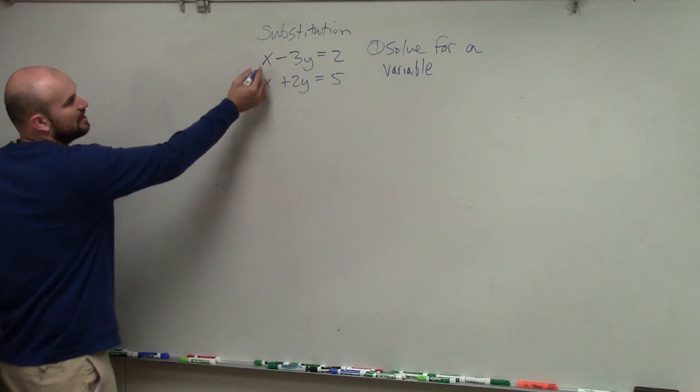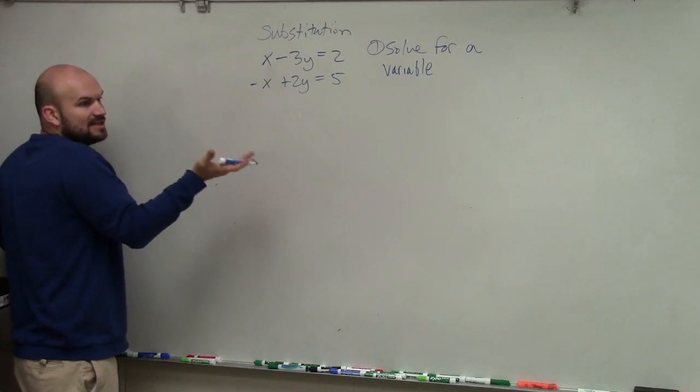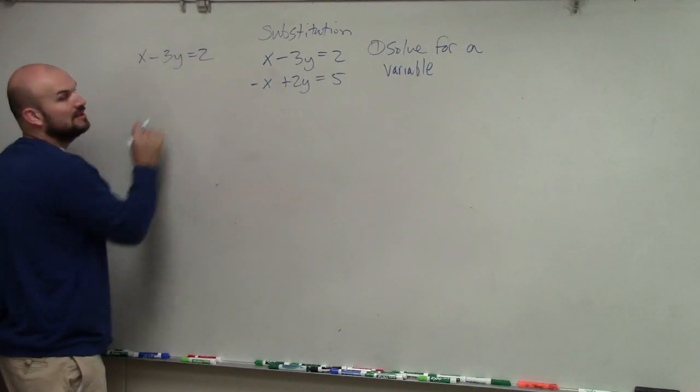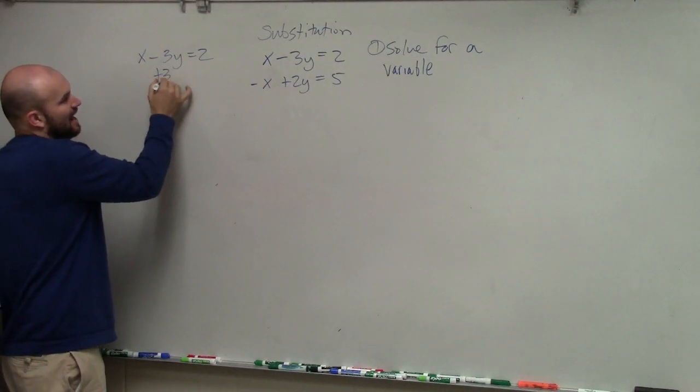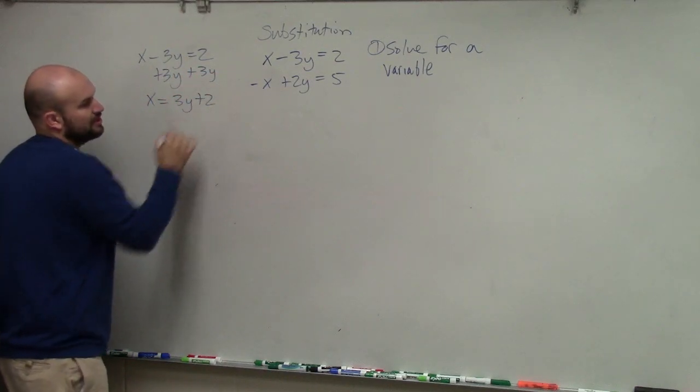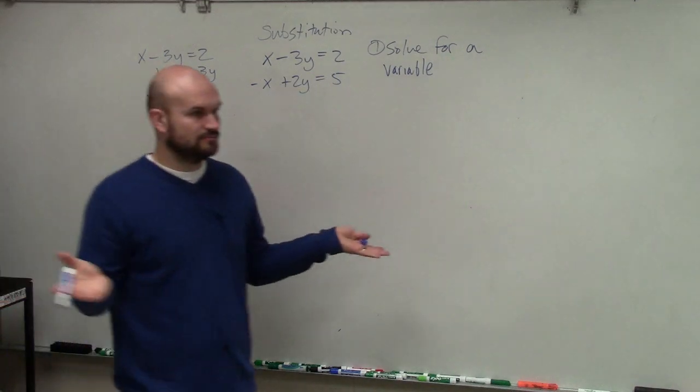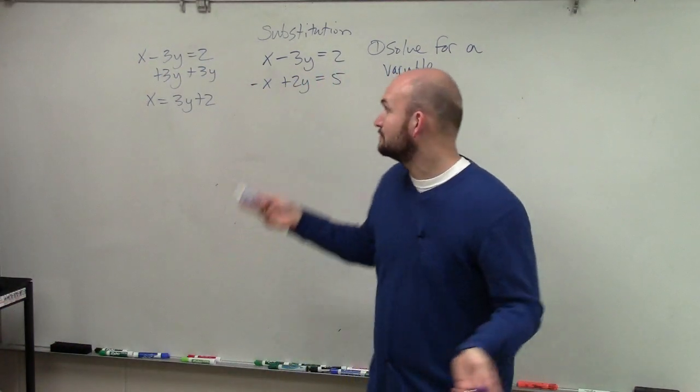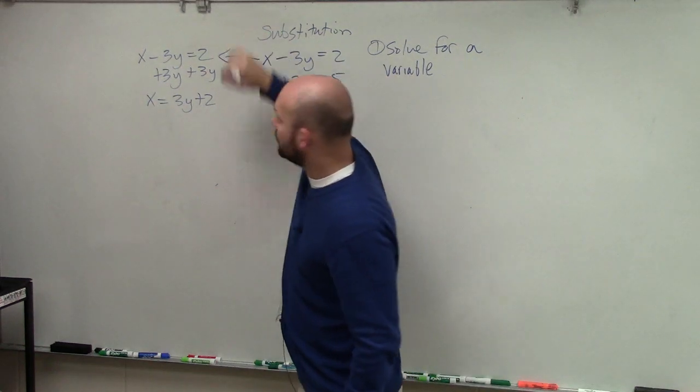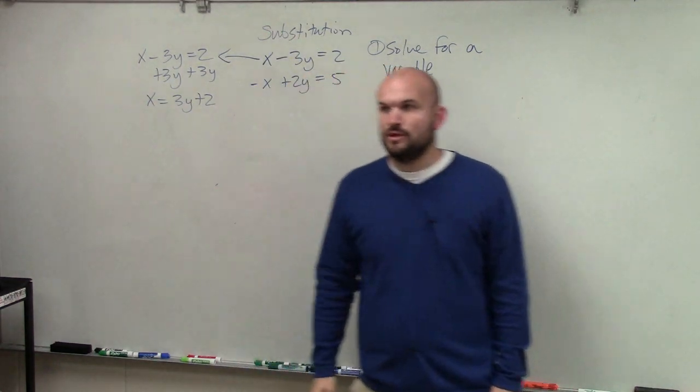So for instance, you want to choose the variable that has a coefficient of 1. So to solve for this, I add 3y. So I have x equals 3y plus 2. I took the top equation and I solved for the variable that had a coefficient of 1.